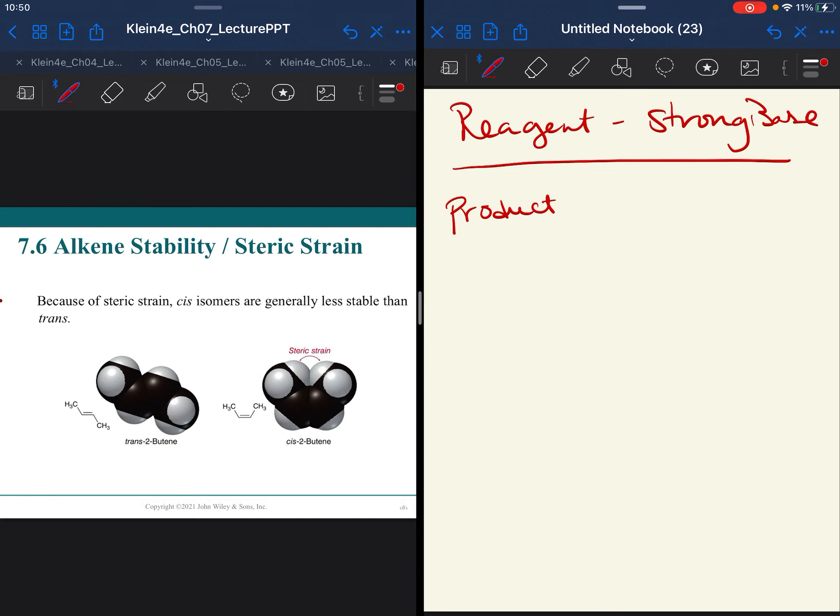But we're going to talk over the next few slides about the product. We know with SN2, there was inversion of stereochemistry, and that was important. With elimination, there is going to be some discussion about the stability of the alkene you form.